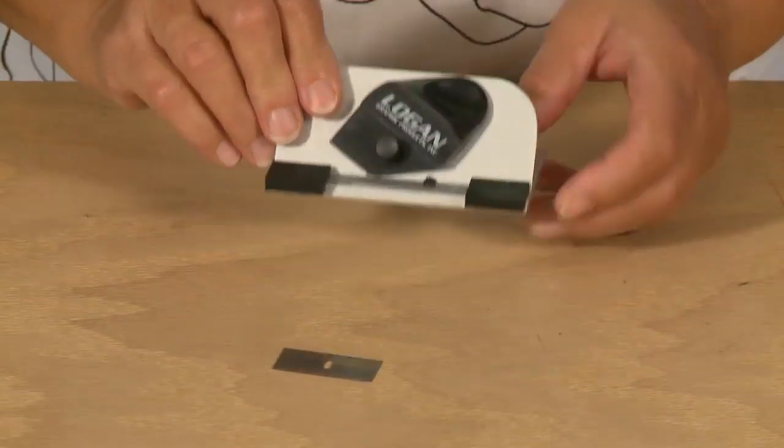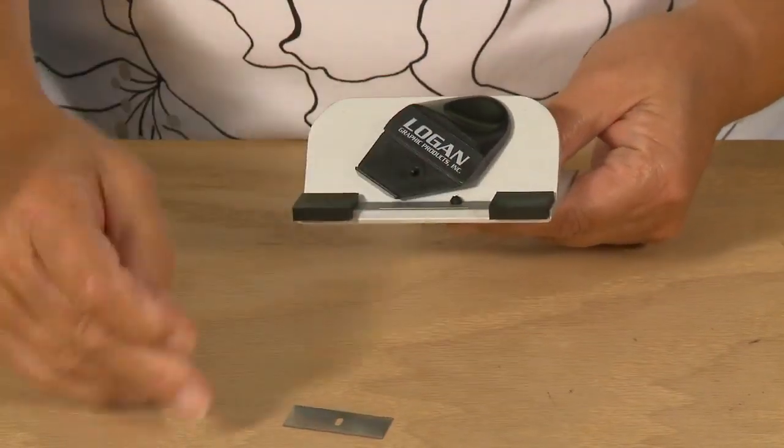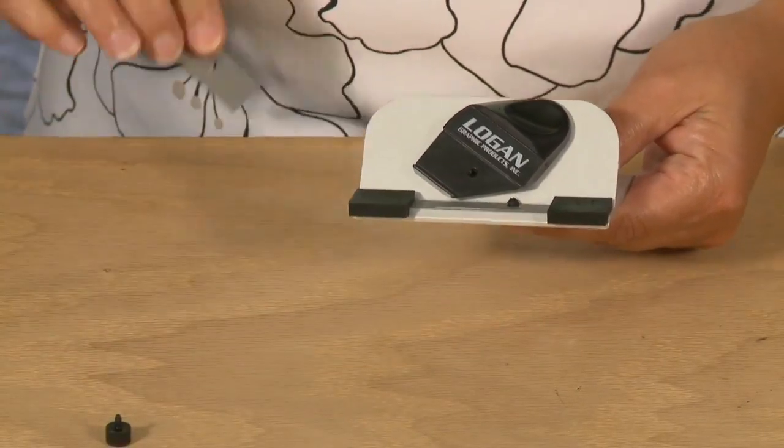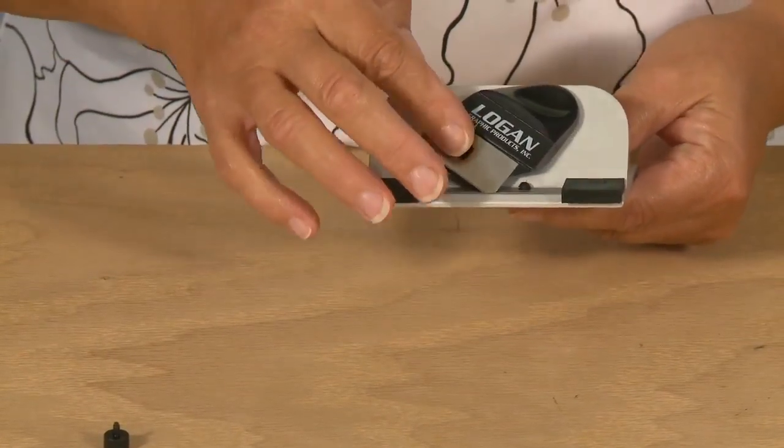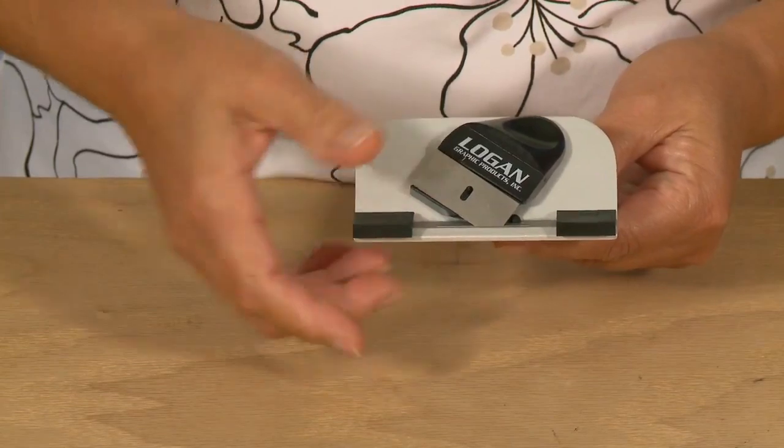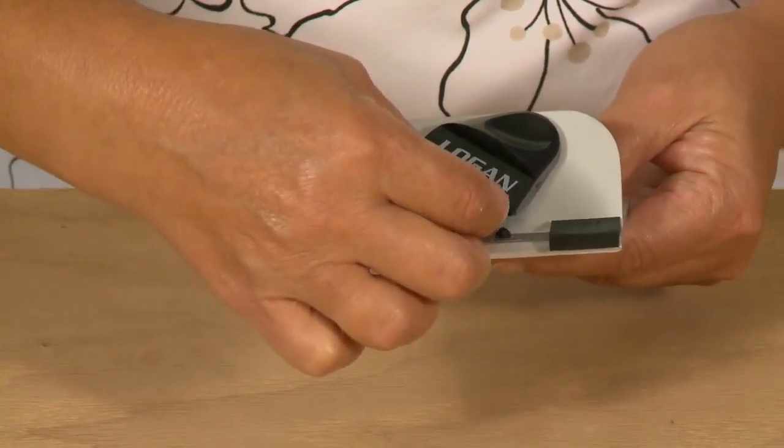To install the blade into the push style bevel cutter, first remove the blade holding knob, and install one Logan 270 blade, sharp side down onto the blade holder, into the blade slot, and replace the blade holding knob.